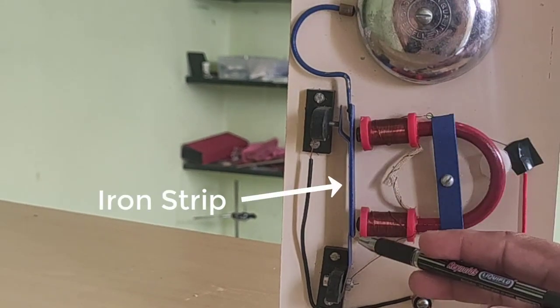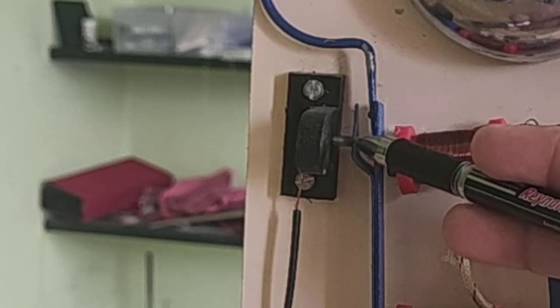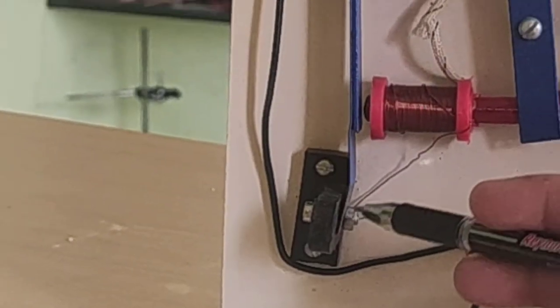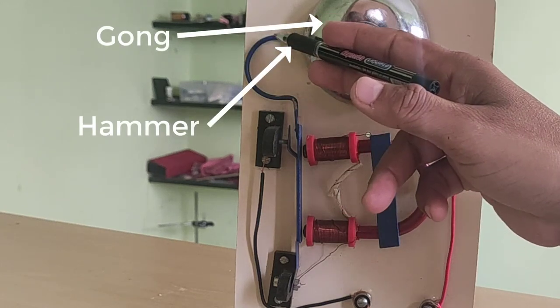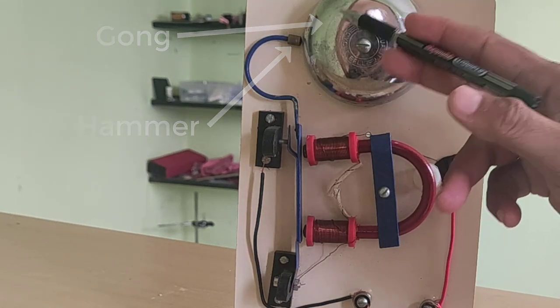Here we see an iron strip which is in close contact with this contact screw. It is fitted with a screw here and here we see a hammer which is going to strike on this gong of the bell.